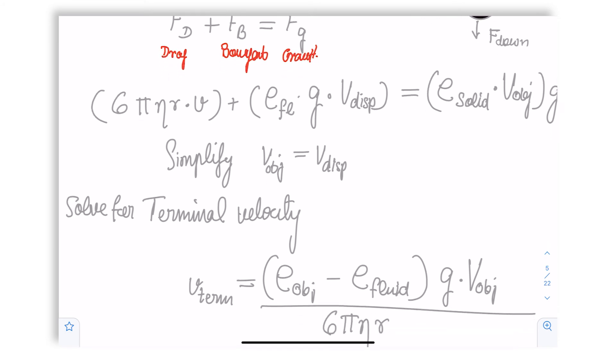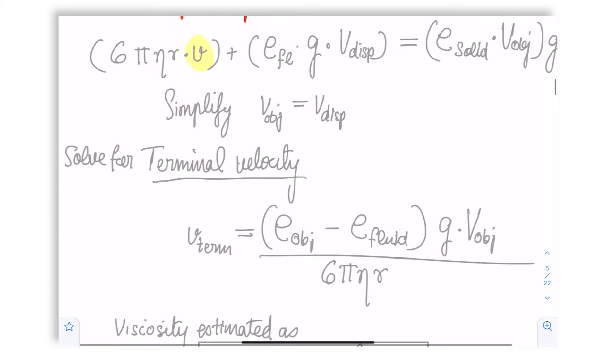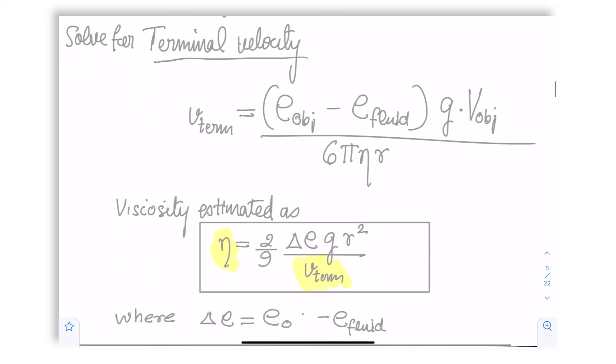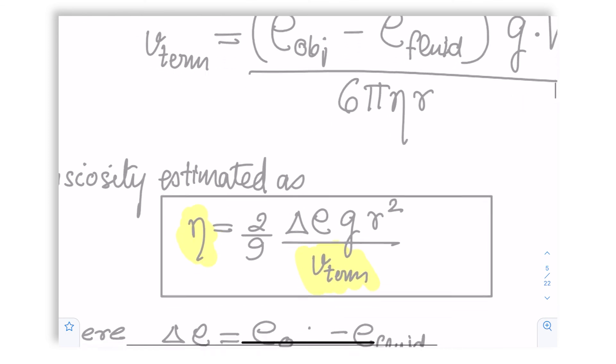In that case, when we solve for the velocity term, which is what we are interested in—namely this one here—then we get a term for the terminal velocity. This terminal velocity then becomes the difference between the object density and the fluid density, as you know, familiar to you perhaps, times the gravitational acceleration g times the object volume upon 6 pi eta r.